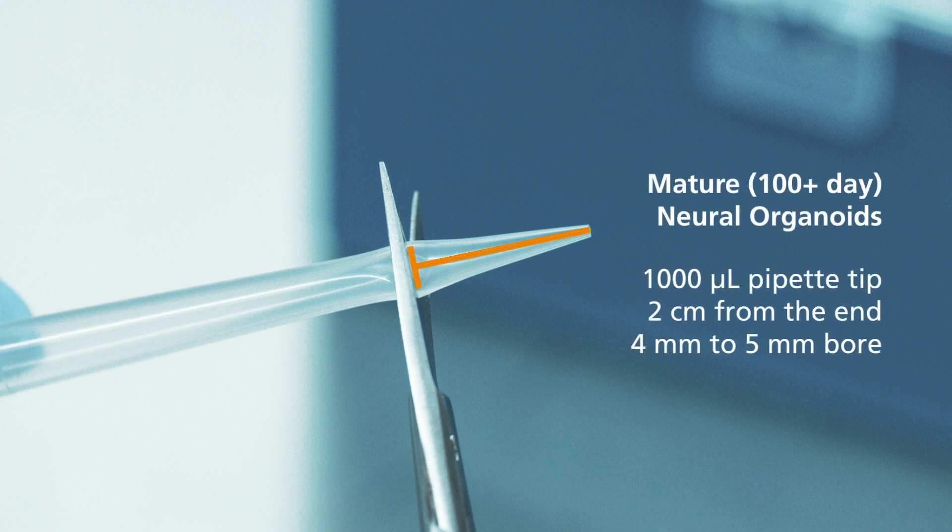For mature neural organoids, cut approximately 2 cm from the end to create a 4-5 mm sized bore.